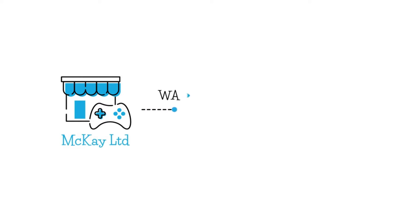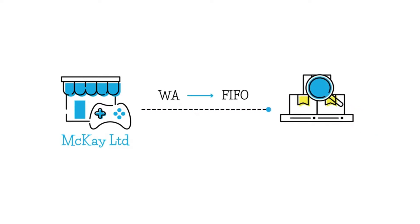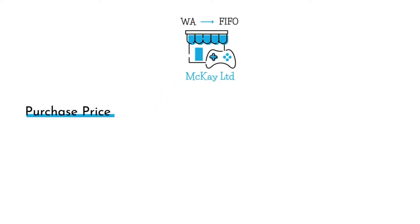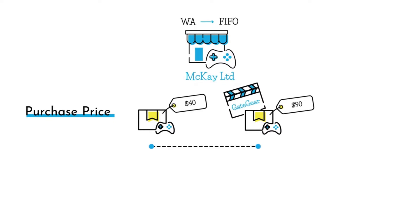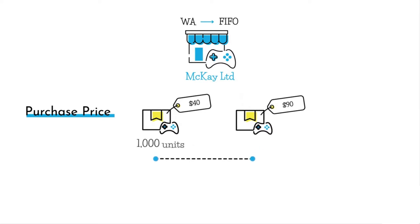McKay Limited, an electronic store, has considered switching from weighted average to FIFO for its inventory valuation. Prices have been rising over this period and the cost of a unit of the Gate Game Gear is now $90, whereas the first units purchased during the period were only $40. There were 1,000 units originally purchased at $40 per unit and 100 units purchased subsequently at the higher price of $90.